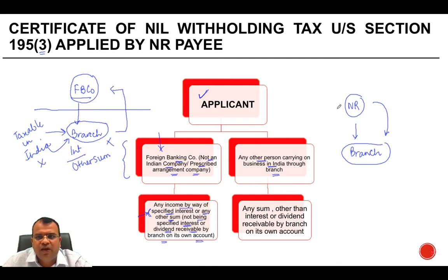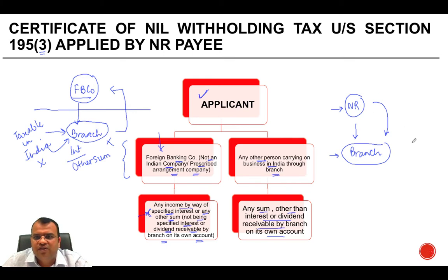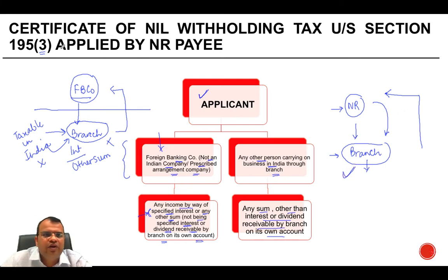Similarly, for any other non-resident carrying on business in India through a branch, the certificate can cover any sum other than interest or dividend receivable by the branch on its own account. So if this non-resident receives any other sum — other than dividend or interest relating to the activities of the branch — they can apply for a nil withholding tax certificate under Section 195(3).